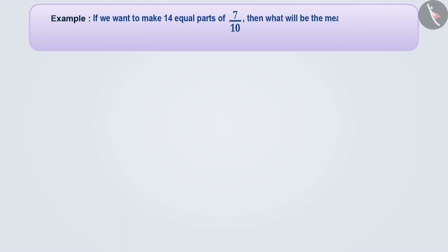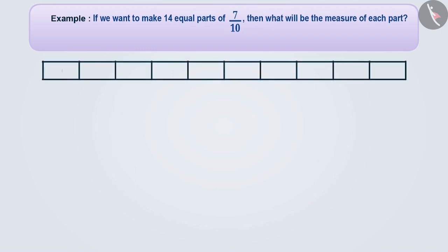If we want to make 14 equal parts of 7 by 10, then what will be the measurement of each part? We have to make 14 parts of 7 by 10 and find the measurement of each part. So let's first make 10 equal parts of a strip and shade 7 of these. The shaded part denotes the fraction 7 by 10.